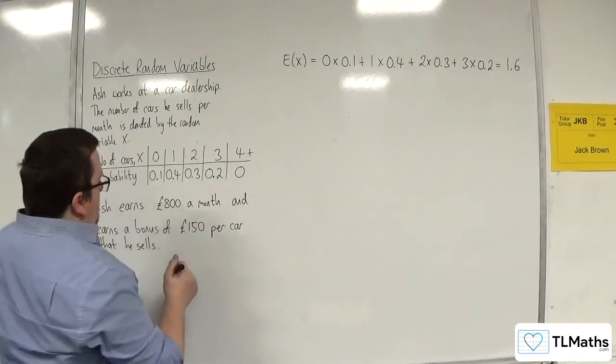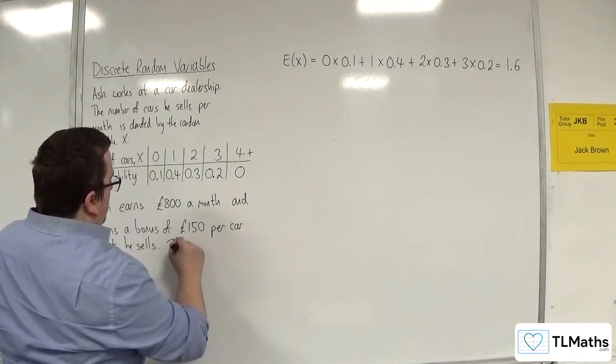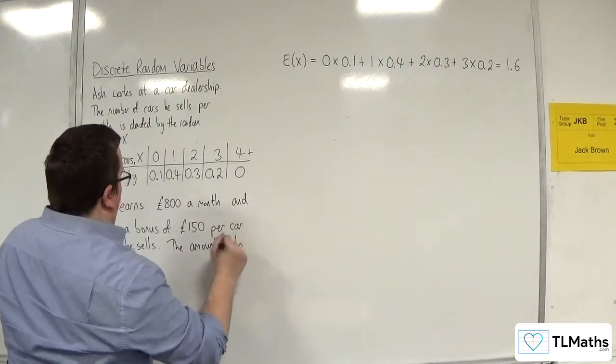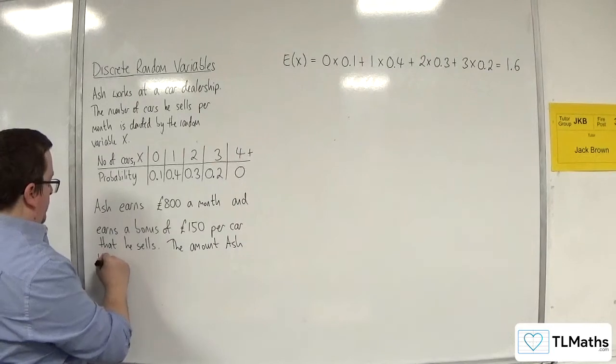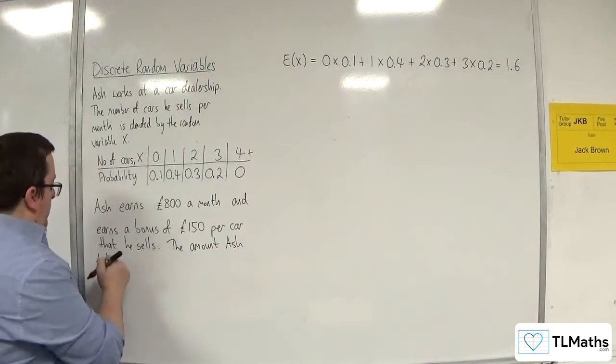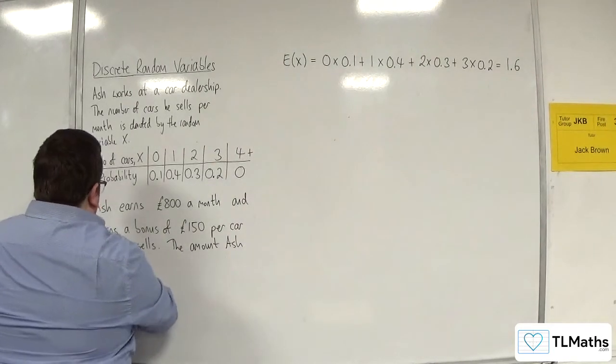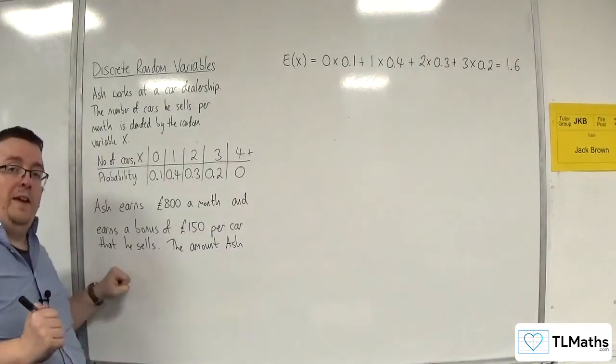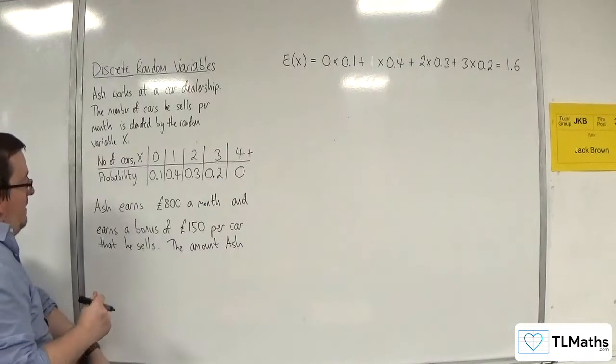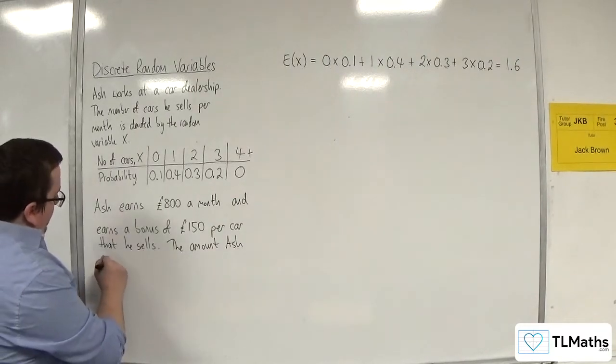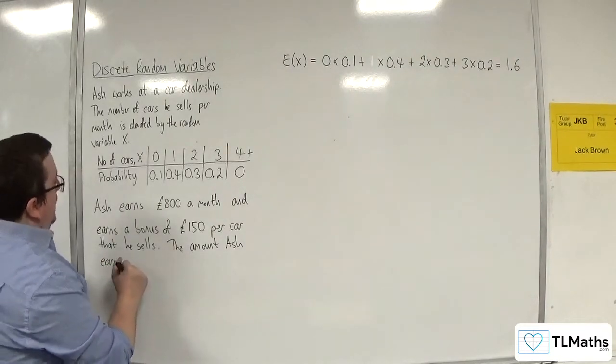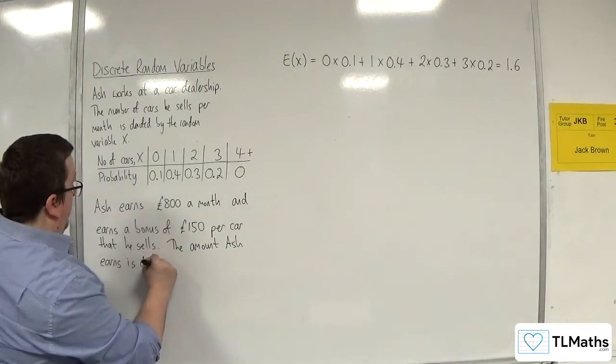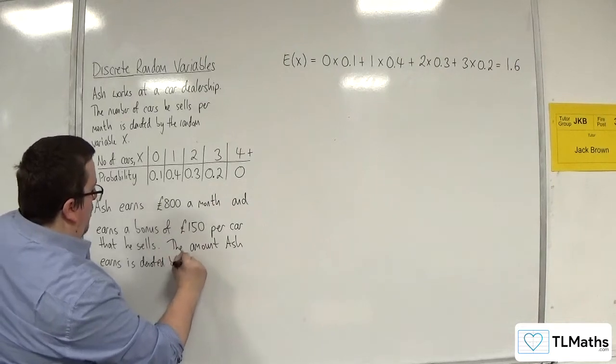So, the amount Ash earns, well, I should probably put earns rather than takes home, just in case you've got to pay the taxes. The amount Ash earns is denoted by the random variable Y.